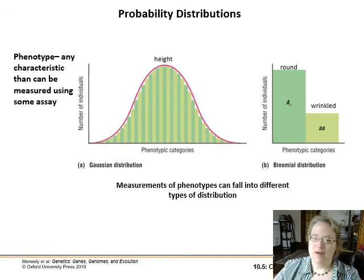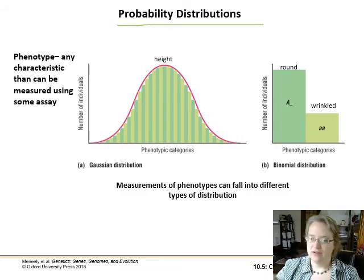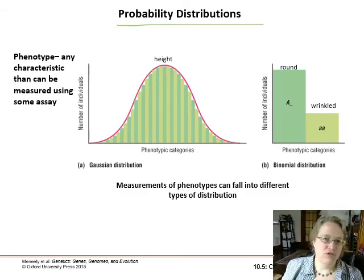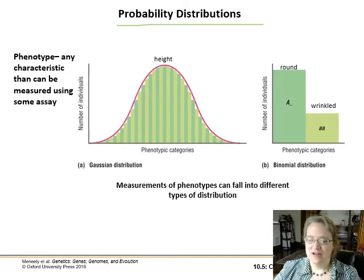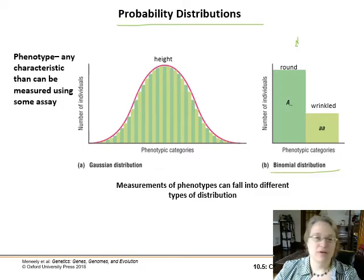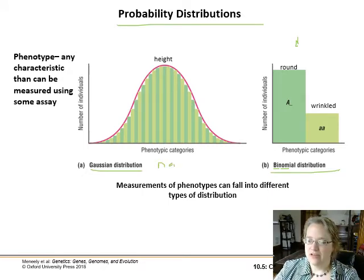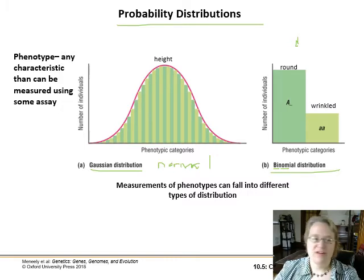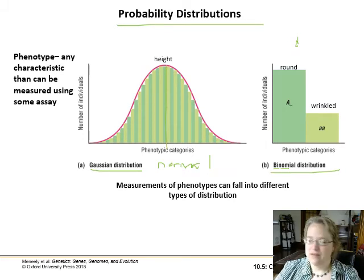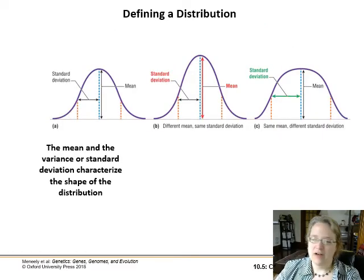Next we're going to talk about probability. Any characteristic that can be measured — whether you look at it and say that's blue or that one's green, or short hair versus long hair — you can see different types of distributions. We have distinct categories, which can also be known as a binomial distribution — like round or wrinkled, just two names. Or we can have a Gaussian distribution, also called a normal distribution, which is the bell curve. With height we have many phenotypic categories but the overall shape is a big bell curve, with the most individuals having medium height in the middle.